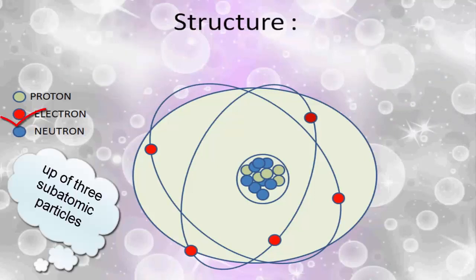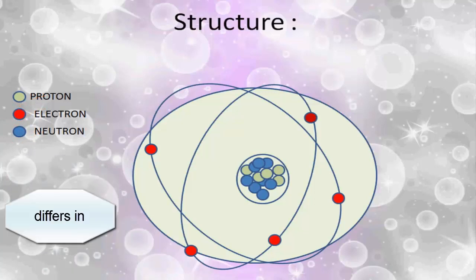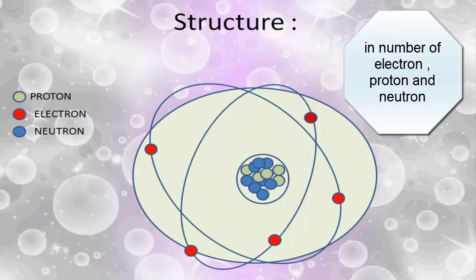Atoms of all elements are made up of three subatomic particles: electrons, protons, and neutrons. And the atoms of different elements differ in the number of electron, proton, and neutron.